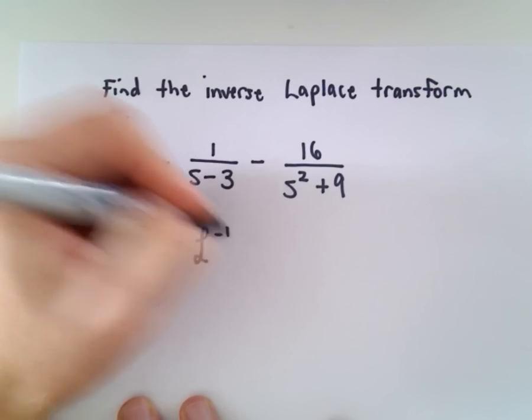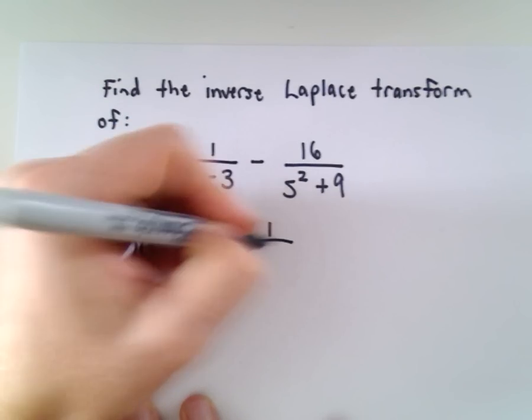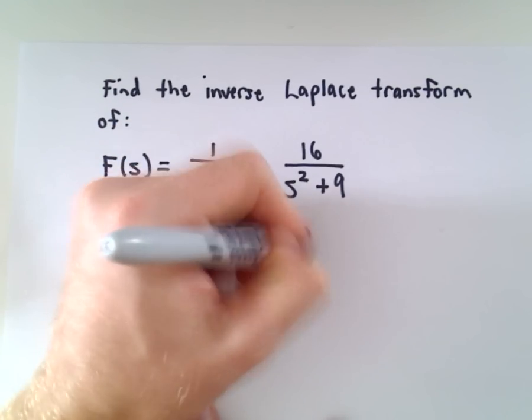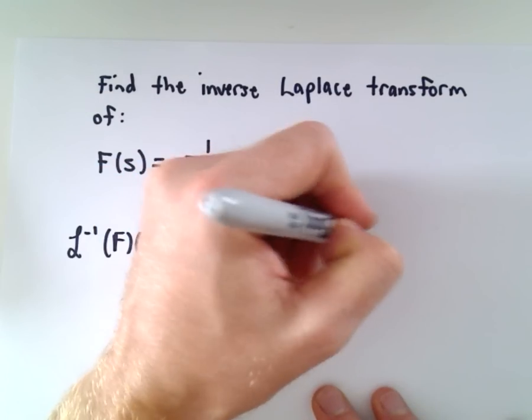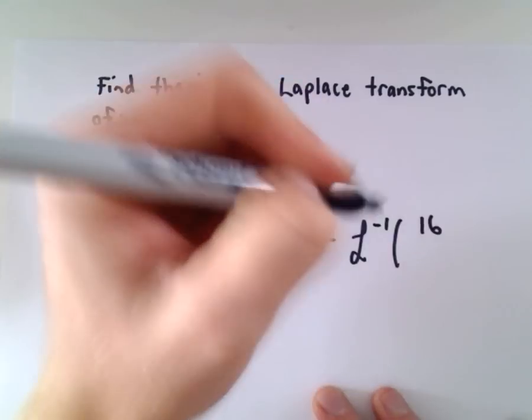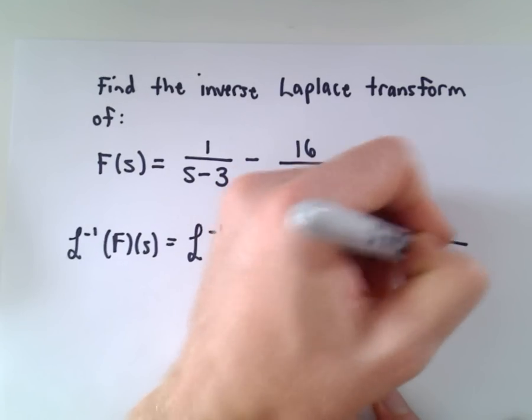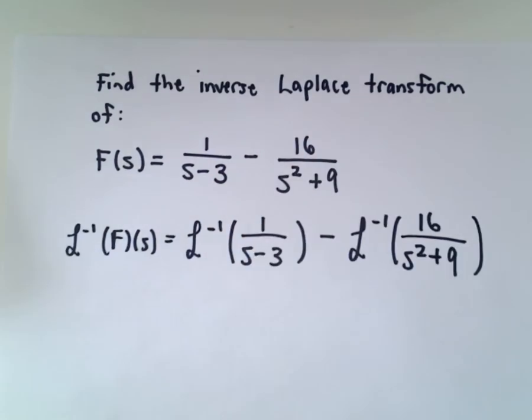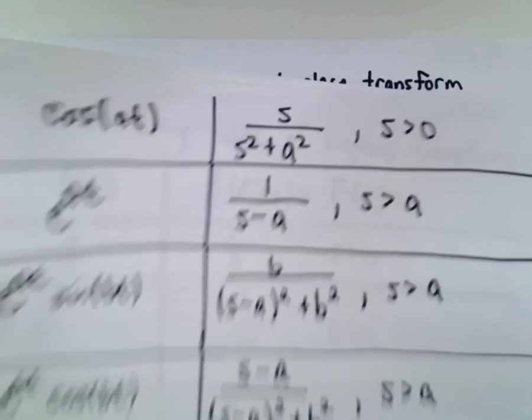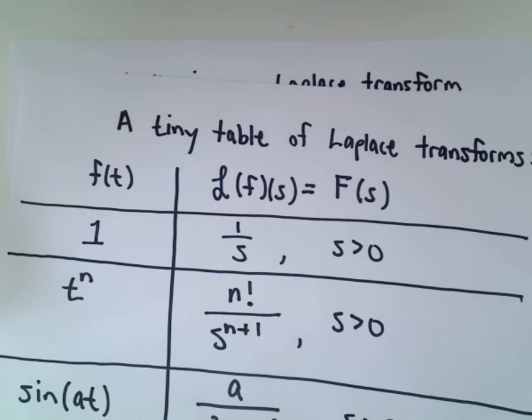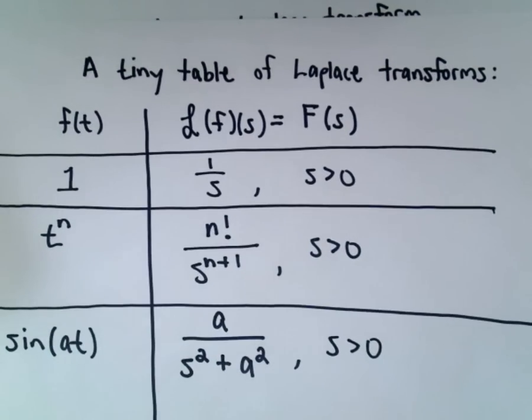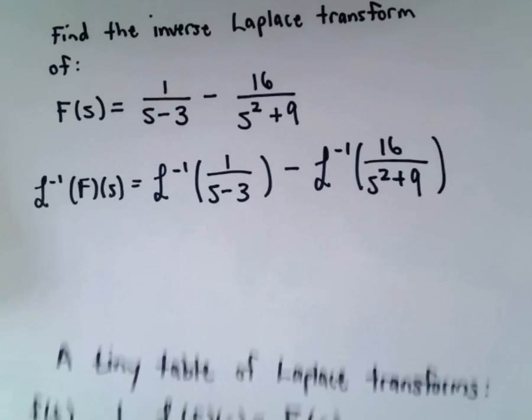The Laplace transform is linear so we can break this up into separate pieces, kind of like if you're taking a derivative or an anti-derivative. Now a lot of it just comes back to finding the appropriate formula to go back to, using your little table of transforms.